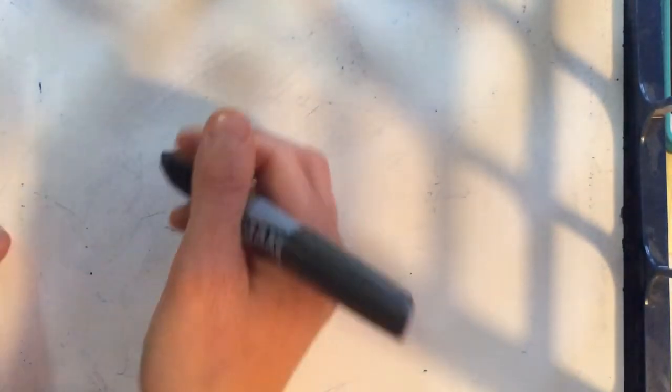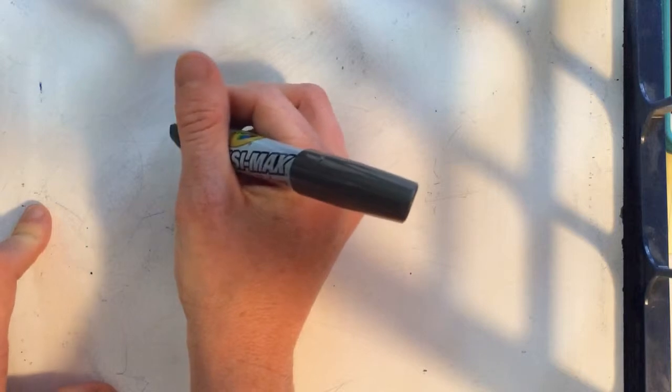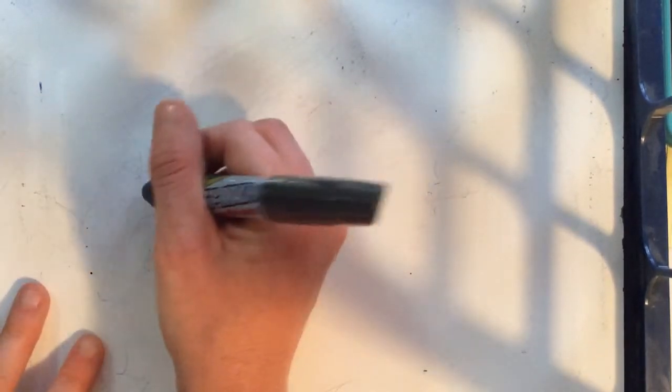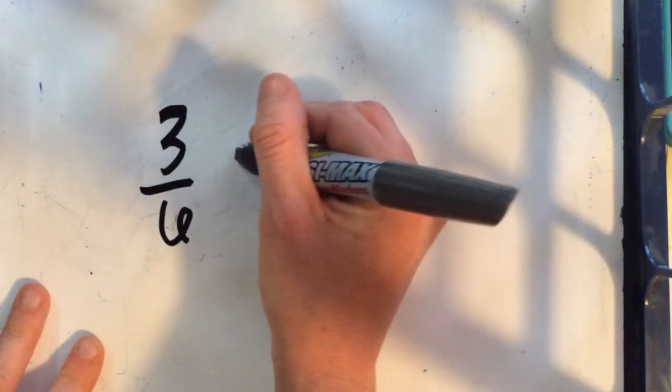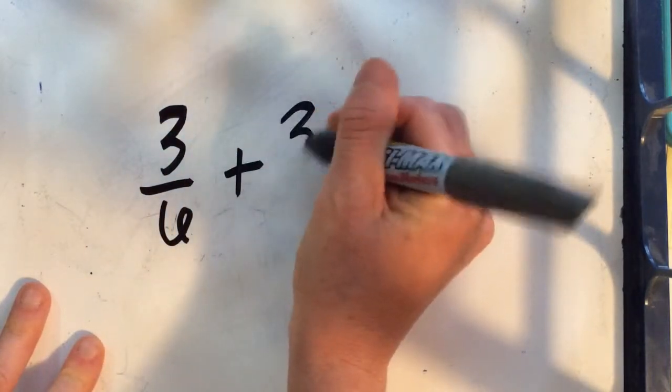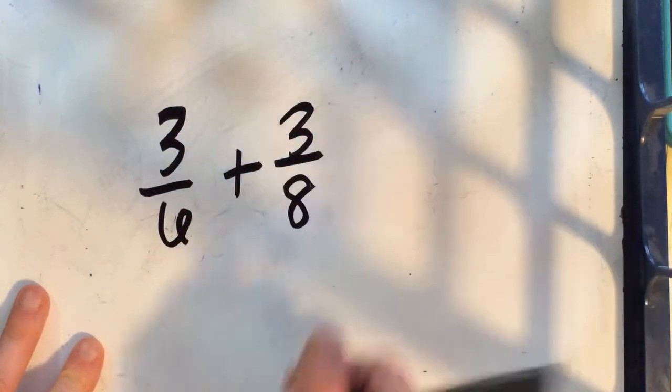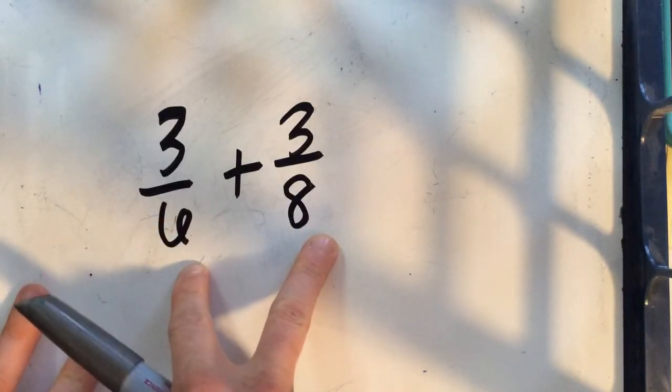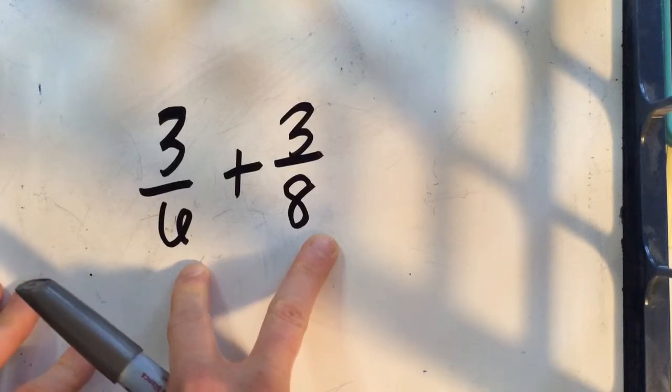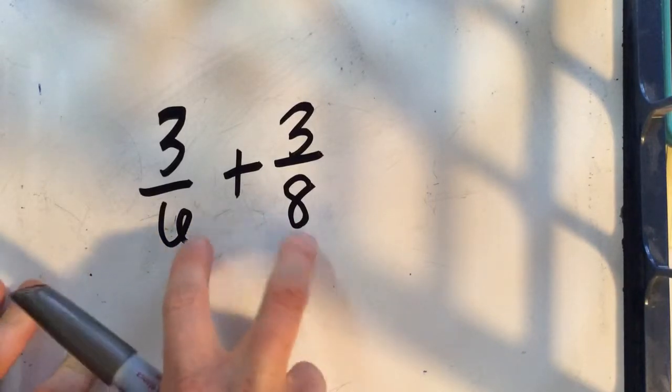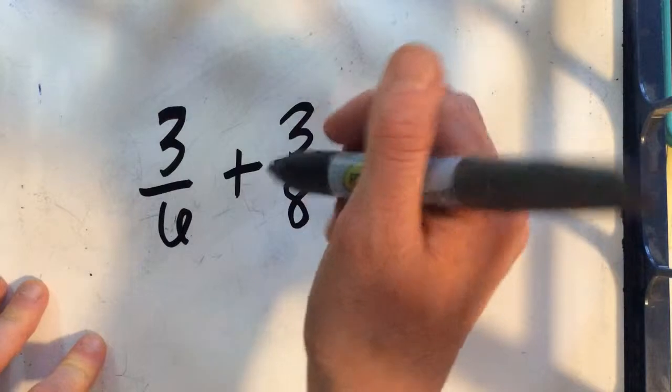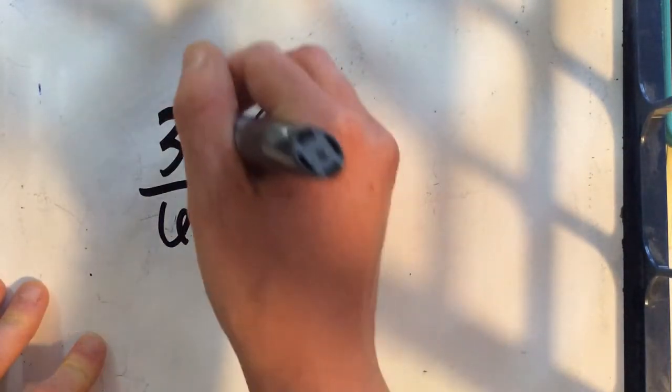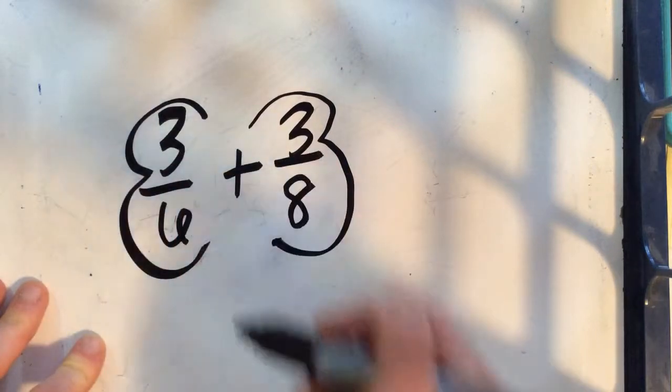Okay, so let's take a look at the addition fraction problem three sixths plus three eighths. I cannot add those because they have different denominators, so rather than trying to find the least common multiple between six and eight, I can just go ahead and try out the butterfly method. So I can kind of imagine this as a butterfly.